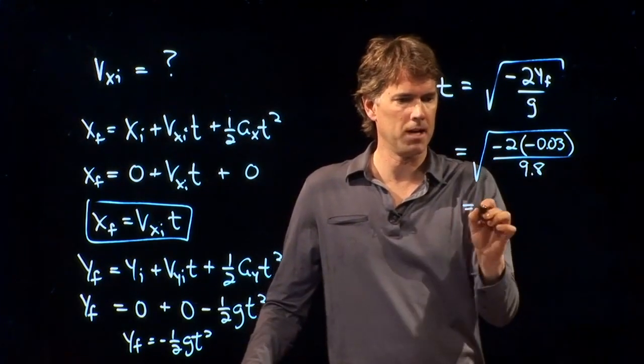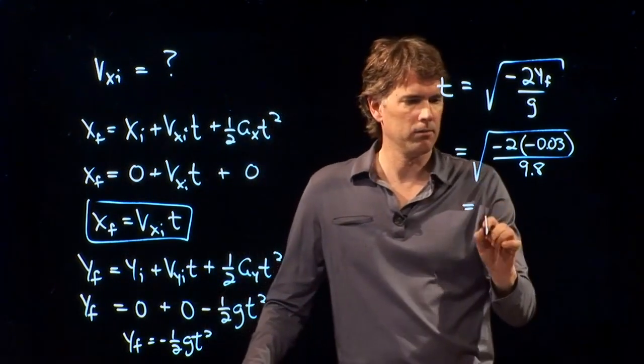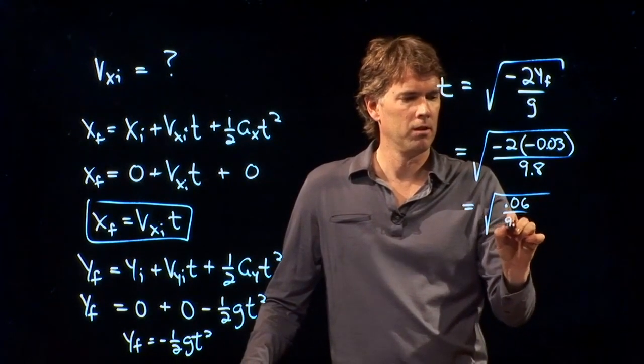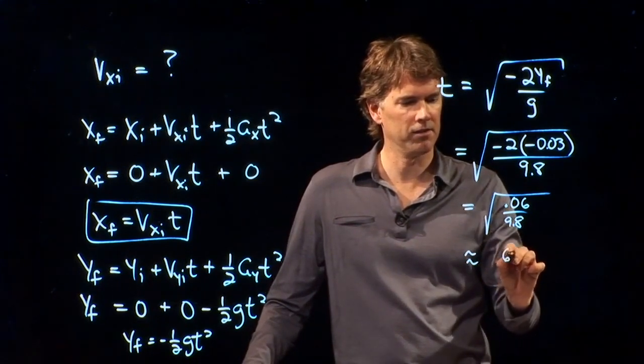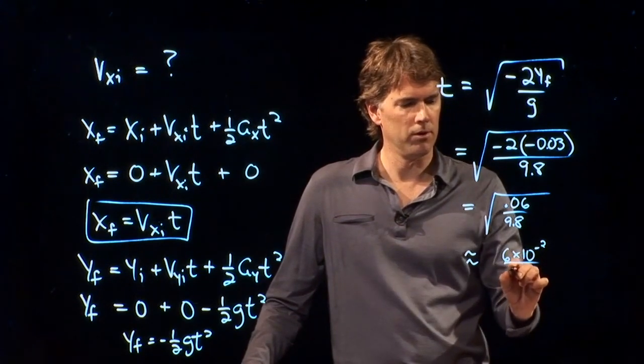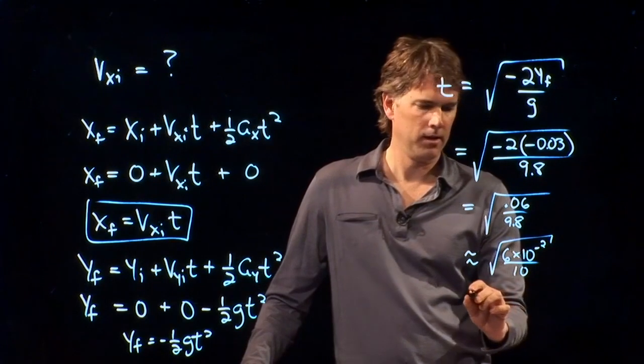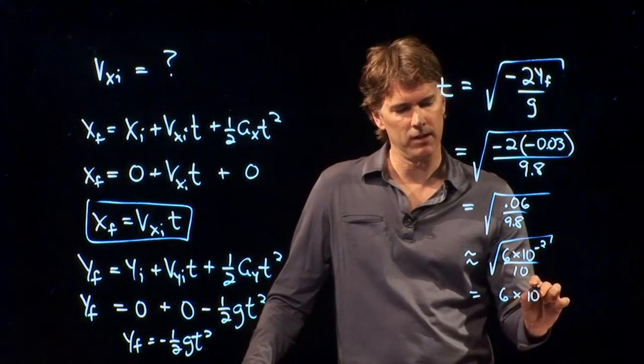So this becomes √[-2*(-0.03 m)/9.8]. We're all in SI units. And we're going to divide that whole thing by 9.8. So plug that into your calculator and tell me what you get. We've got the square root of 0.06 over 9.8. We'll approximate that. That is 6×10⁻² over 10. We're going to take the square root of that. And so that becomes 6×10⁻³.